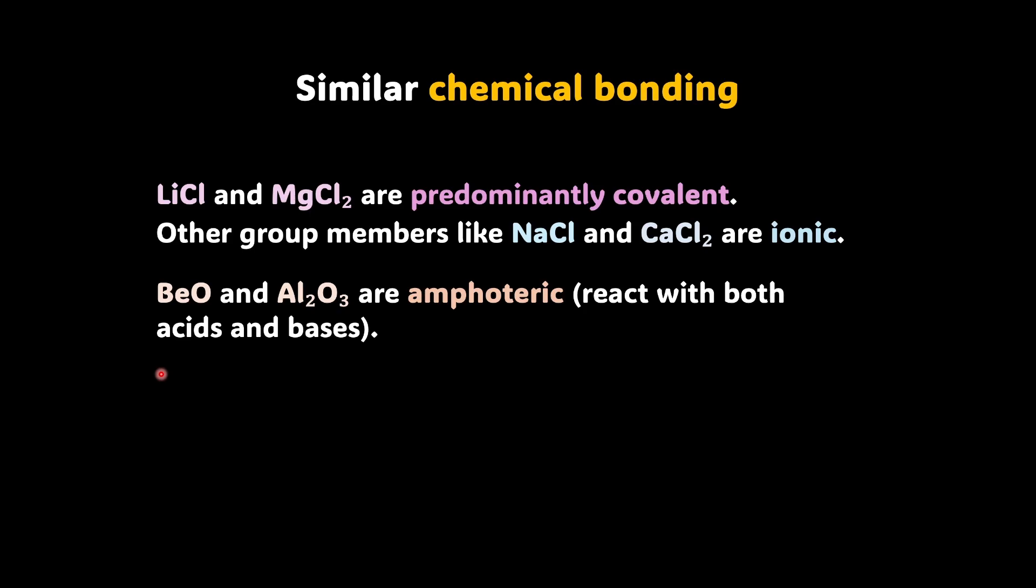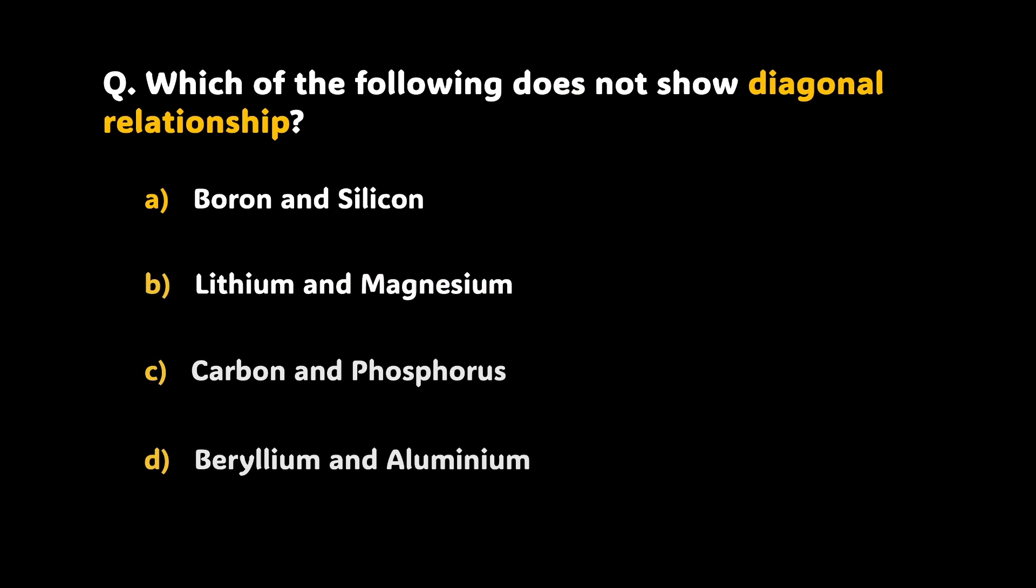Well, with this, now we are well versed with the anomalous behavior and the diagonal relationship. All right, now it is time for a question. The question is, which of the following does not show diagonal relationship? Pretty simple. Pause the video and try this question. Well, I should rather give you option E also here, all of these.